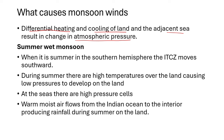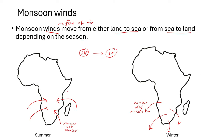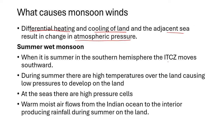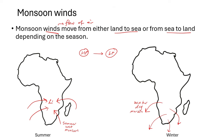During summer in the Southern Hemisphere, the Intertropical Convergence Zone (ITCZ) moves southward — that is the zone where air converges. During summer there are high temperatures and intense heating over the land, which causes low pressure cells to develop on the land. Because it is hot, there is warm air rising, and when warm air rises, a low pressure cell develops.